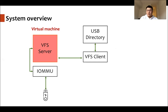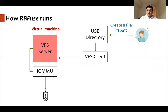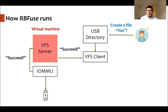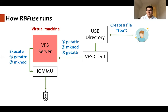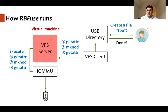Our VFS client is built on top of FUSE, so there are two parts: the user-space daemon and the FUSE kernel driver. When the user tries to create a file called 'foo' in the USB directory, the VFS client translates it into different file system requests to the server. First, it issues a getattr to the server to see whether a file called 'foo' already exists. After the server executes this and returns that no such file exists, the client issues the second request, mknod, to create the file. The server executes this and returns success. So the client issues a final getattr to confirm the file exists, and the VFS client tells the user all operations have finished.